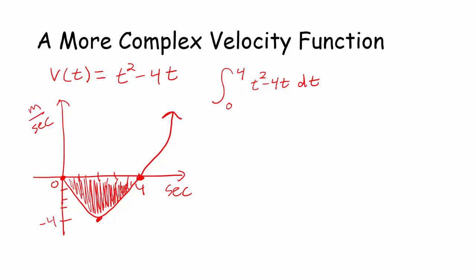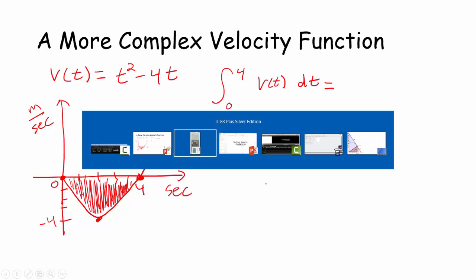It's just important that we understand that if I write the integral from 0 to 4 of t squared minus 4t dt — since this is the velocity function, the y values are in meters per second and the t values are in seconds, multiplying those units gives meters. That represents over 4 seconds how far the object is traveling. Looking at the graph, that's going to be a negative value. You can either write out the function t squared minus 4t, or you can just write v of t — that doesn't matter.